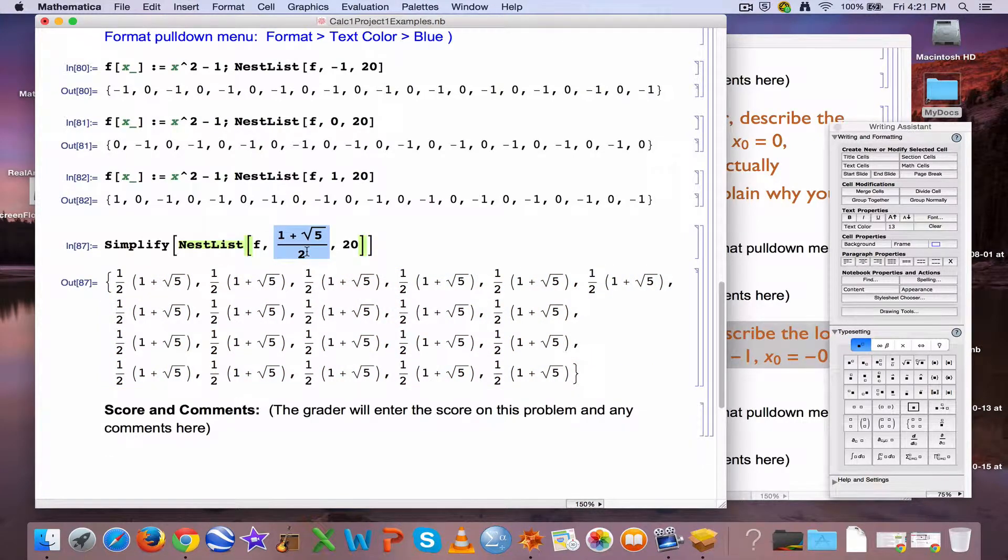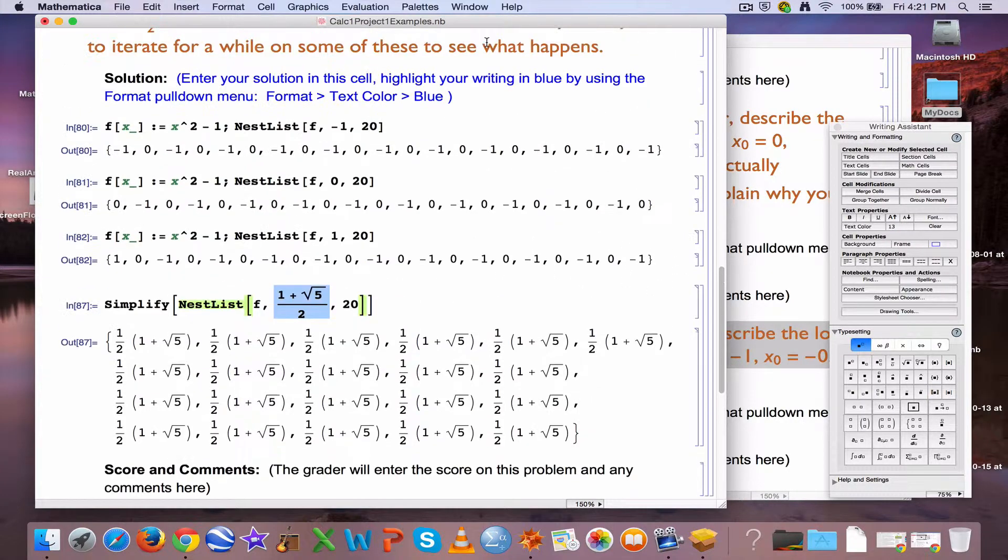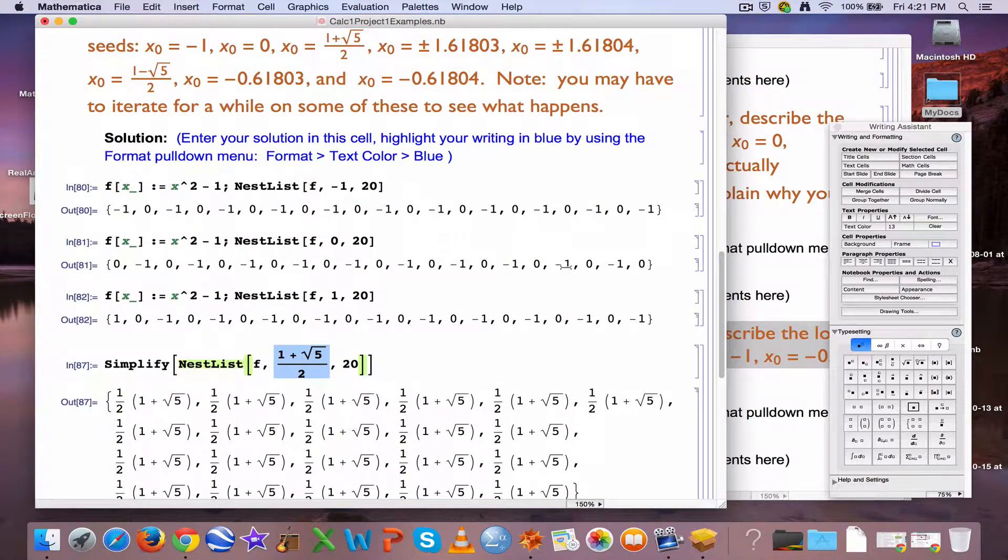In fact, (1 + √5)/2, that exact expression for an exact number, is a fixed point for this function. Okay, so that's something else that you should describe up here. You could describe in the words 0 and negative 1 generate cycles of period 2, bouncing back and forth between 0 and negative 1 all the time. (1 + √5)/2 is a fixed point. The iterates stay fixed all the time.